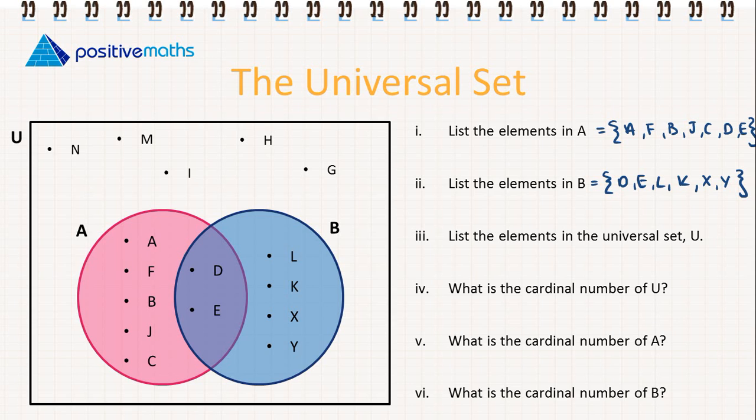Now we're going to list the elements in the universal set U. So they will include N, M, I, H, G, A, F, B, C, D, E, L, K, X, and Y.